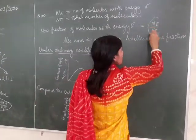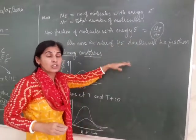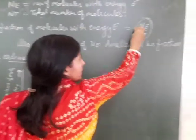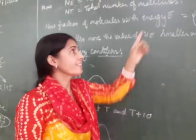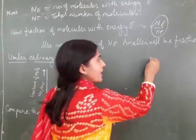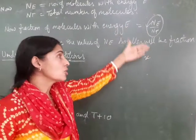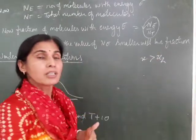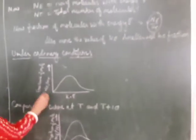Now what is the use of this fraction of molecules with energy E? This will tell us how the reaction depends upon the temperature. And also you understand higher the value of NE, smaller will be the fraction. If we have 10 molecules having energy E, the fraction will be some X value. And if we have 50 molecules out of 100 which are having energy E, so the fraction will be even less than your fraction X2 which we now got. So now under ordinary conditions, NE by NT...